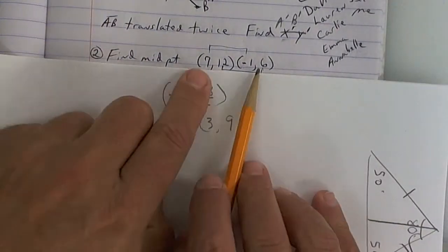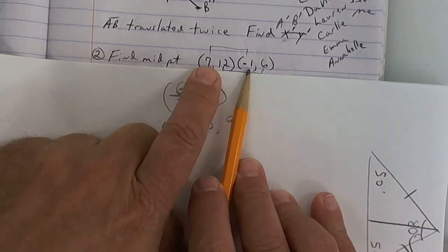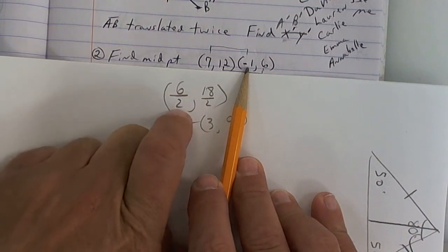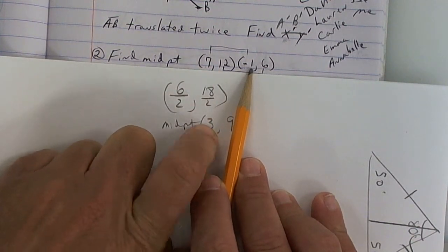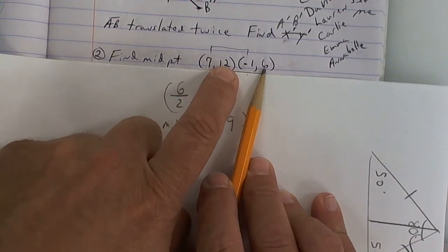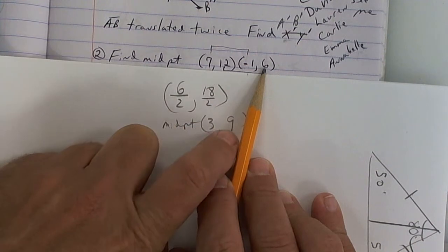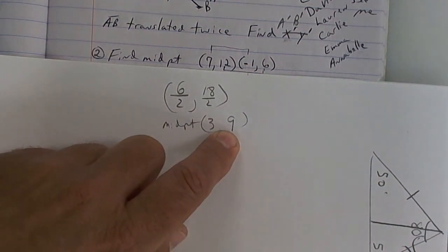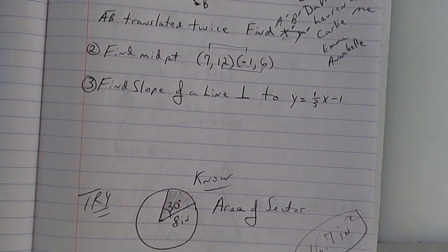That's, look, add up. What's 7 plus negative 1? And what's 6 divided by 2? And what's 12 plus 6? And 18 cut in half is how much? 9. Is everybody clear on that? Midpoint. It's halfway.